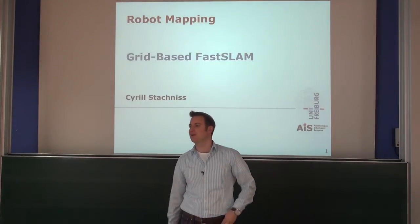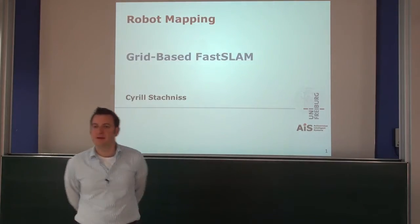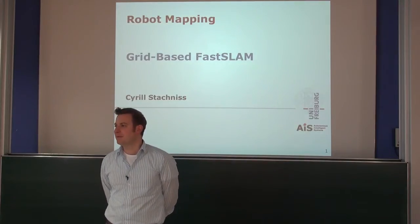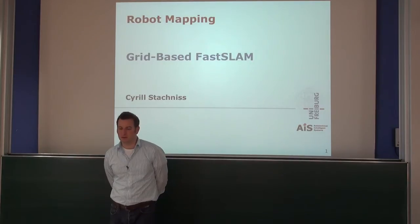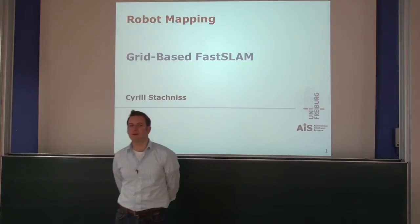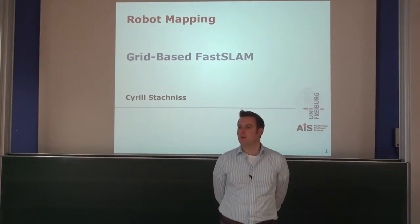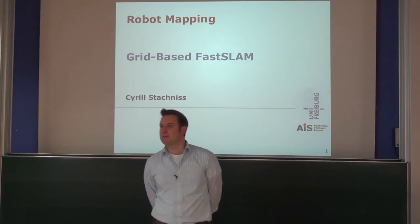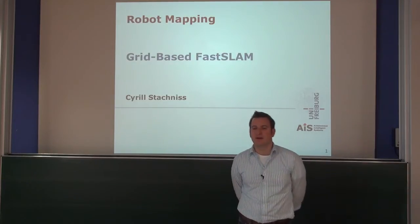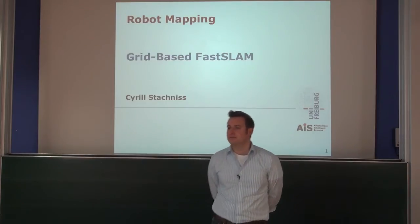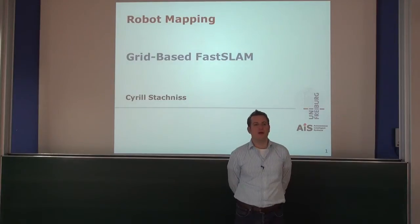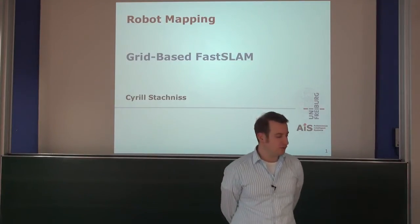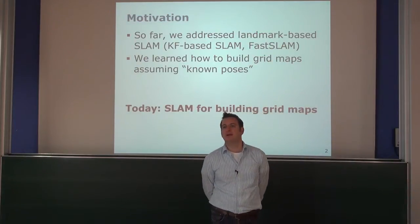Today we look into the last chapter of particle filter-based simultaneous localization and mapping. We present a variant of FastSLAM that allows us to build grid maps. So far, all the mapping we have done was using landmark-based approaches to SLAM, where we assumed landmarks in the environment that we can identify with our sensor and extract features to build a map of those landmarks, storing the XY or XYZ location in the environment.